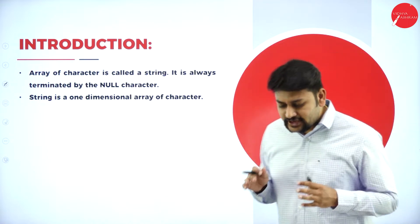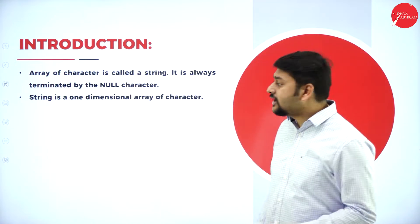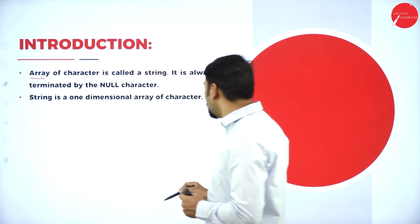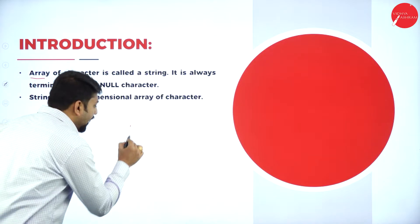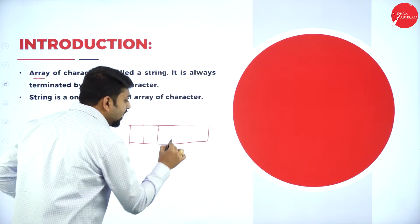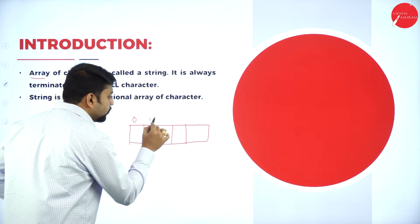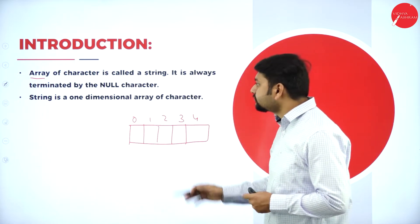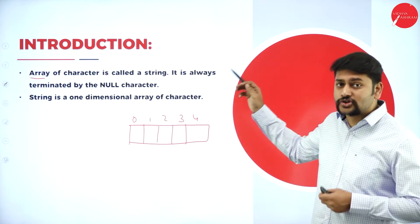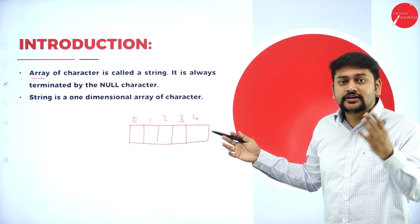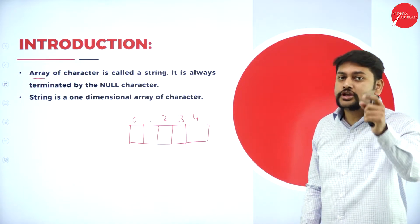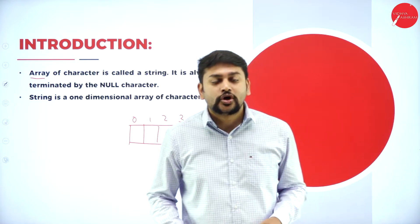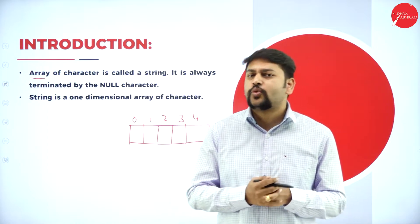Moving on to the introduction part. As the definition says — please remember this — whenever I say array, you have to visualize this image. The definition: an array of characters is called a string. Point number one: it is always terminated by a null character.